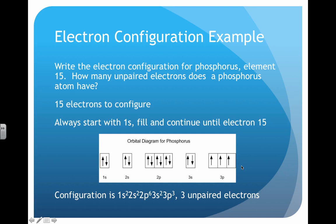If we're looking for unpaired electrons, we're looking for single electrons. We can see that there are three unpaired electrons for phosphorus.